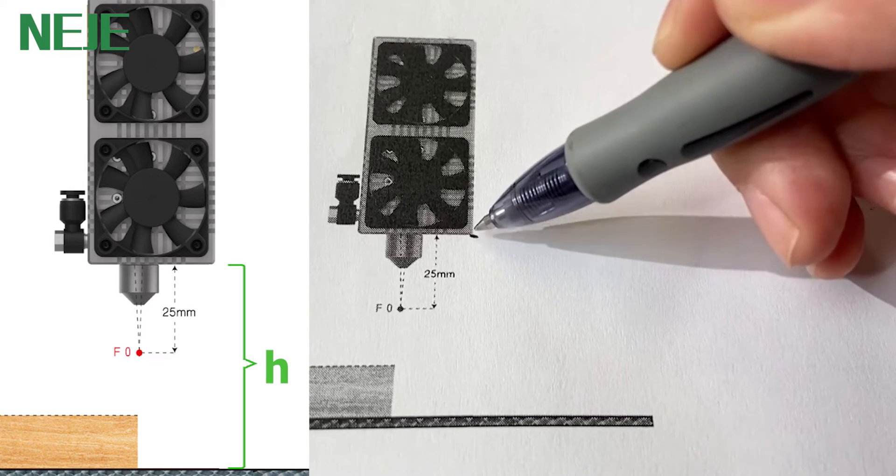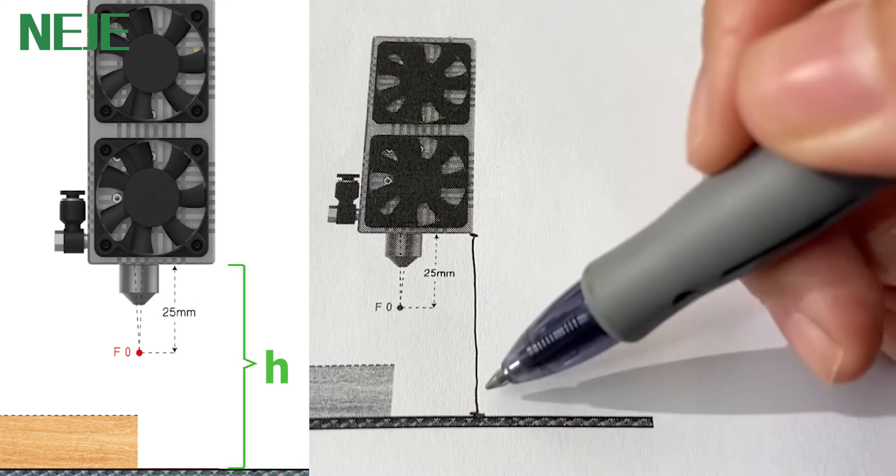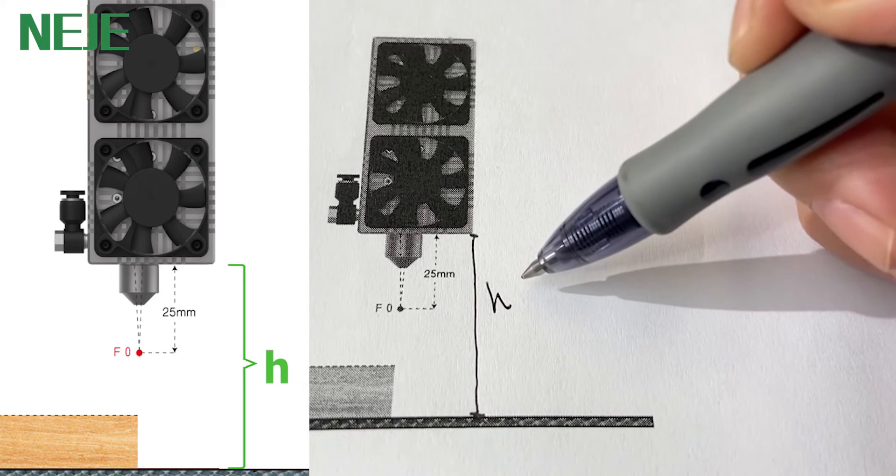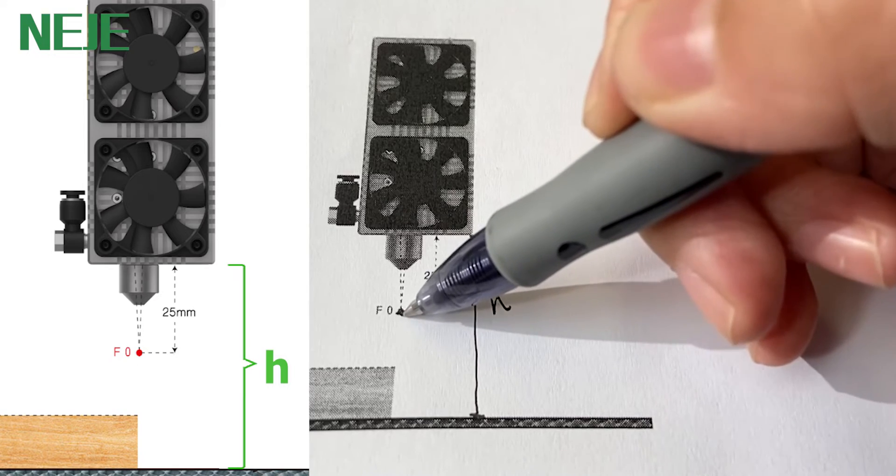So here will be a H from the edge of the module to the honeycomb board. This number is a fixed number. And the Z-offset here, you can see.